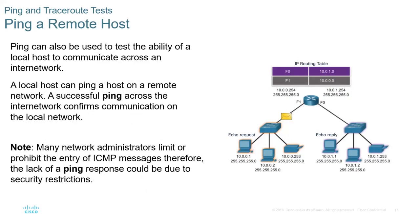Ping a remote host: Ping can also be used to test the ability of a local host to communicate across an internetwork. A successful ping across the internetwork confirms communication on the local network. Note that many network administrators limit or prohibit ICMP messages, so a lack of ping response could be due to security restrictions. Cloud hosting services also do not allow you to ping inside their network, but if you're doing labs pinging between routers, it should work.